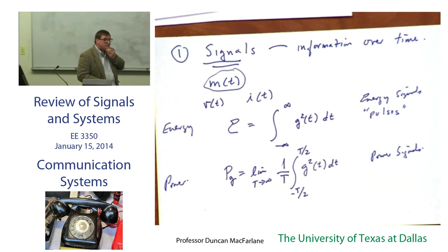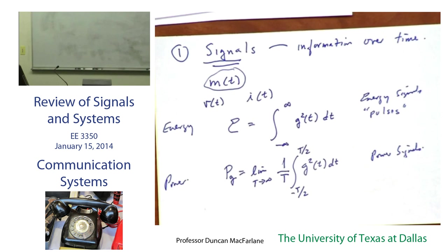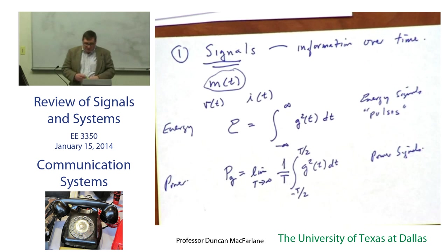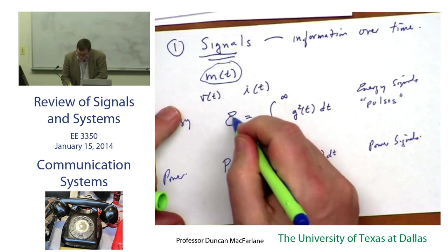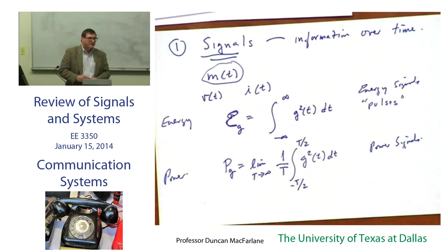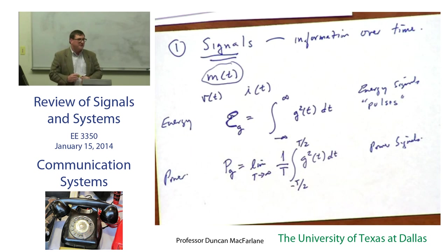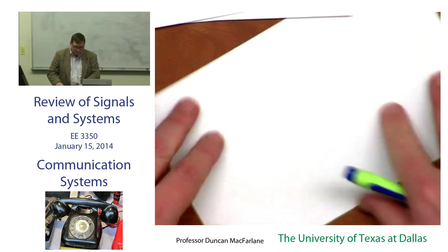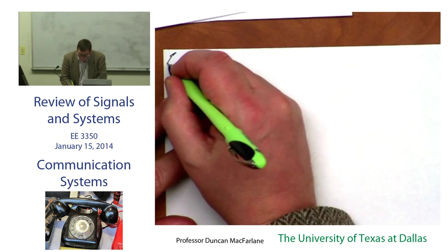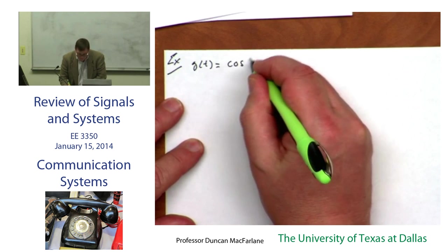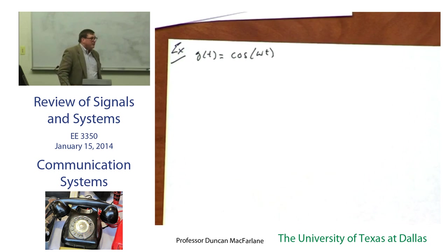Let's do a quick example. This is an example that we will do a million times, and this one is periodic. But we're not going to use the periodicity of this. The limits of integration are T over two and minus T over two. Cosine squared of omega T. When you see cosine squared of omega T, what's the first thing you want to do to it? Trig identities. Always — that'll make our life a lot easier.